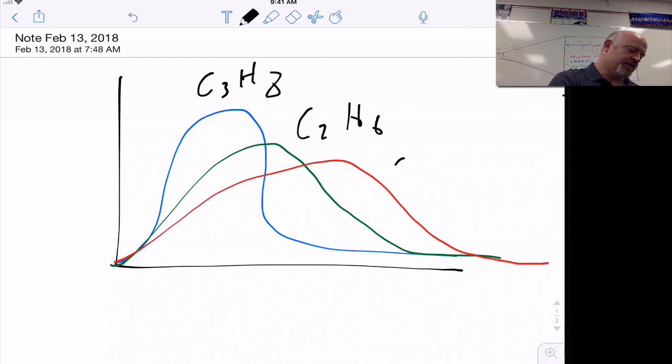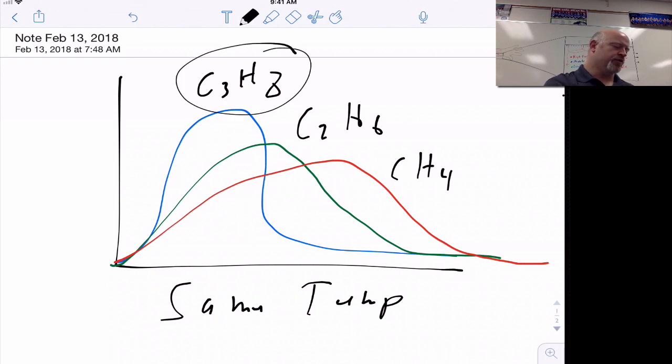So if you take a look, you can also graph this based off of weight or how heavy something is. And if we look, your heavier particles - here now we have the same temperature - so at the same temperature your heavier particles, your propane, is going to move slower than your ethane, than your methane.